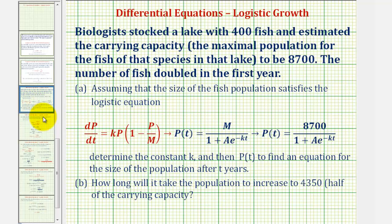Biologists stocked a lake with 400 fish and estimated the carrying capacity to be 8,700. The number of fish doubled in the first year. Assuming that the size of the fish population satisfies the logistic equation, determine the constant k and then P(t) to find an equation for the size of the population after t years.